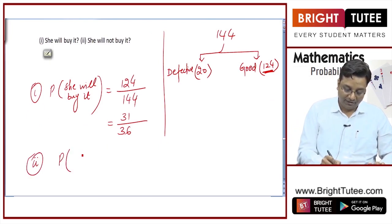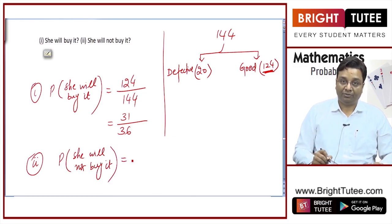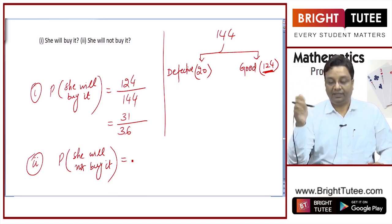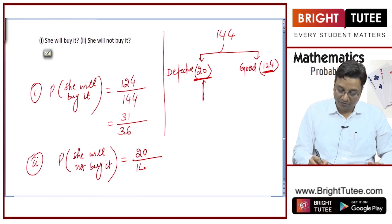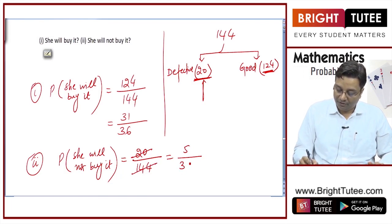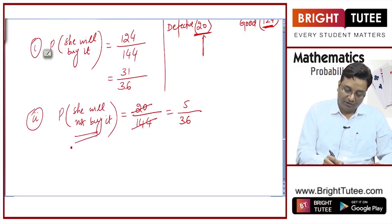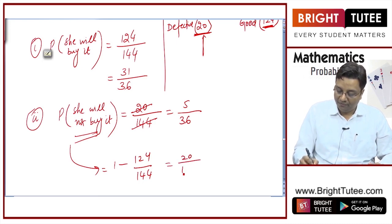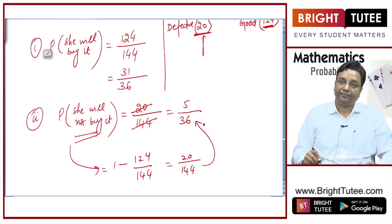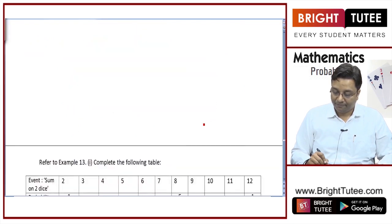Second: probability that she will not buy it. She will not buy it if the pen is defective, so the favorable outcomes this time are 20 defective pens divided by total outcomes 144. Simplifying: 5 by 36. Alternatively, you could compute 1 minus 124 by 144, which gives 20 by 144, the same answer. So this was about this question.